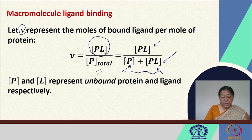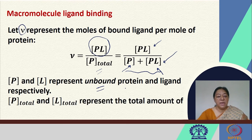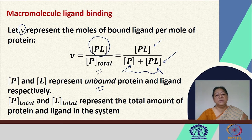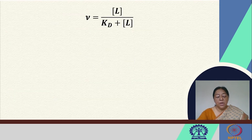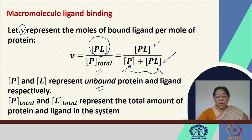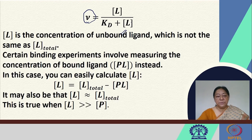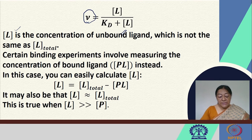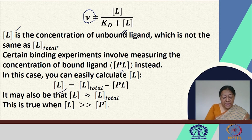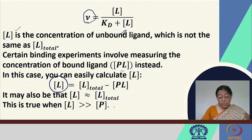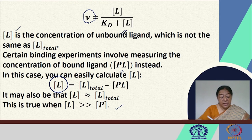The unbound forms P and L correspond to the free protein and free ligand. PL, P-total, and L-total represent the total amounts of protein and ligand in the system. In certain binding experiments, we measure the concentration of bound ligand and from that calculate the free ligand. If the total ligand concentration is very high, we can approximate the free ligand as equal to the total ligand.